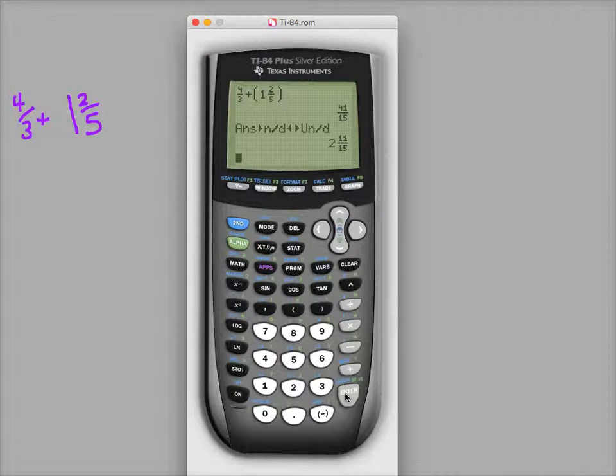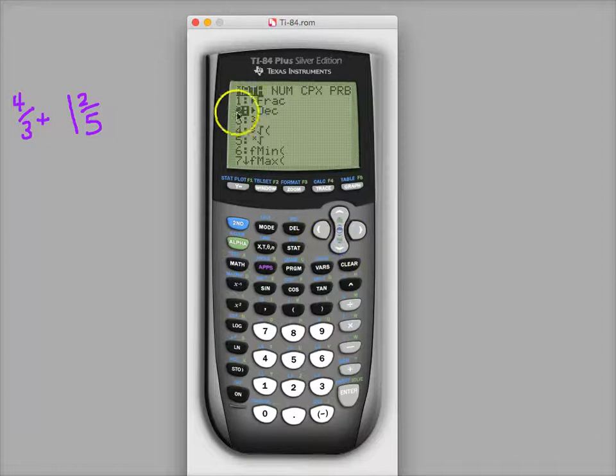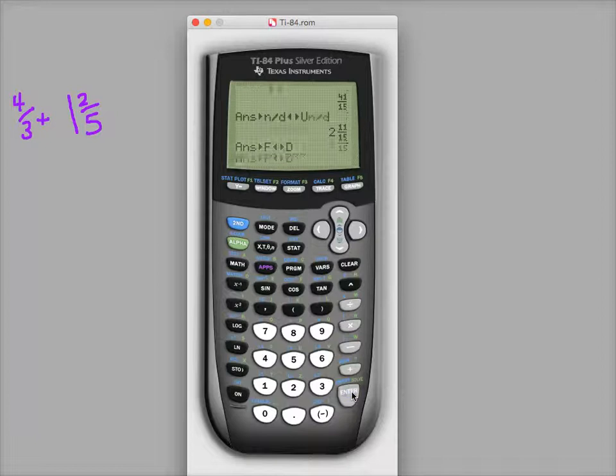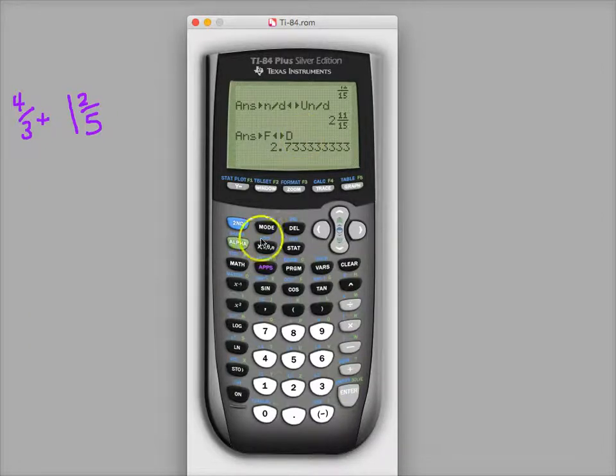And well, what if I don't want that? What if I just want it to be a decimal? There is the change it to a decimal button. You just go to math and it's like the second one down. You go to numbers and then you just click up a few times to where you get F to D, which is fraction to decimal, and it'll convert it to 2.733.